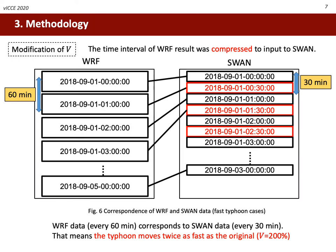I would like to explain two modifications to translate speed and wind field respectively. The first is the translate speed. The fundamental idea is to compress or stretch the WRF time alignment. This figure shows the correspondence of the time series of WRF data and SWAN data. The WRF data is aligned every 60 minutes, but it is compressed to 30 minutes when inputting to SWAN. This essentially means that the translate speed was doubled. The change of translate speed will be expressed as a percentage ratio to the original speed, so this faster case should be regarded as a 200% case.